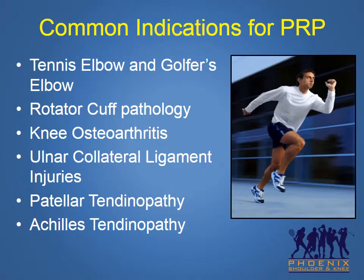PRP can be used to treat any process in which the body is slow to naturally heal itself. The most common uses for PRP in orthopedics include the treatment of tennis elbow and golfer's elbow, rotator cuff pathology, osteoarthritis of the knee, ulnar collateral ligament injuries of the elbow, patellar tendinopathy, and Achilles tendinopathy.